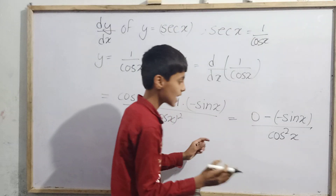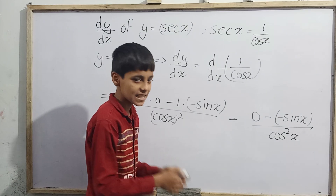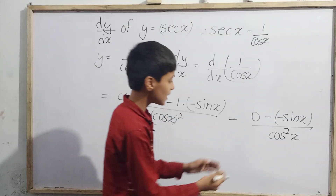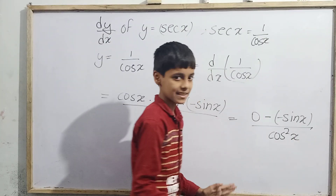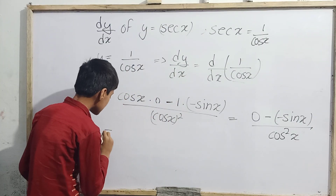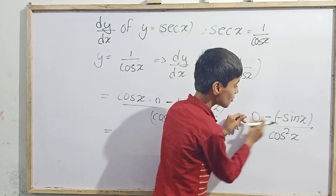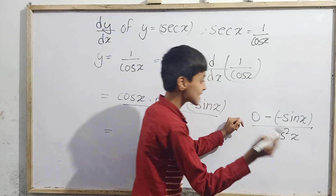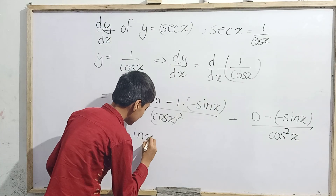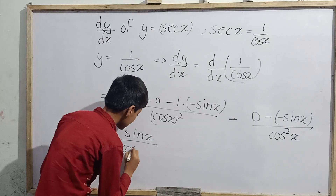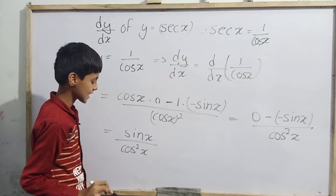Note that (cos(x))² is cos²(x) — just as (sin(x))² is sin²(x). So simplifying: the numerator becomes 0 + sin(x), giving us sin(x) divided by cos²(x).